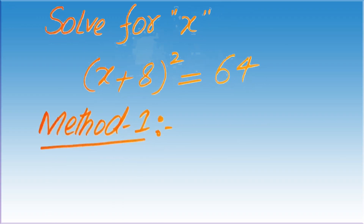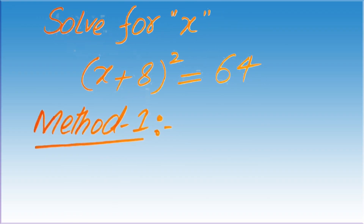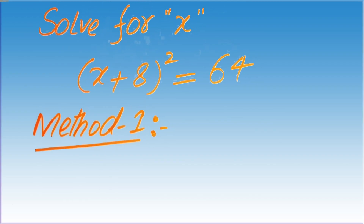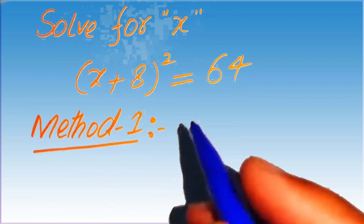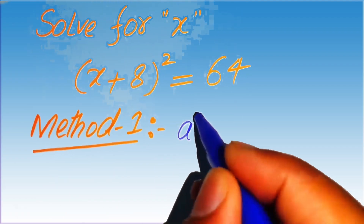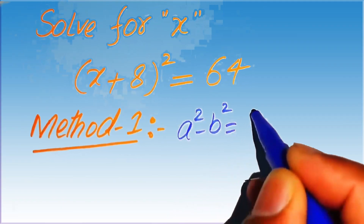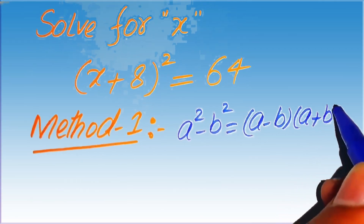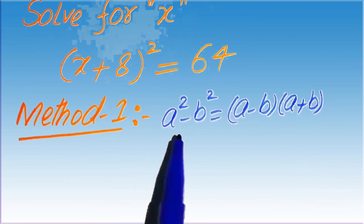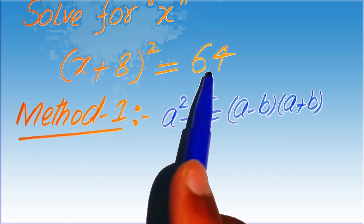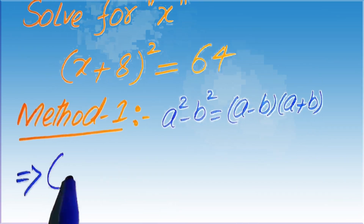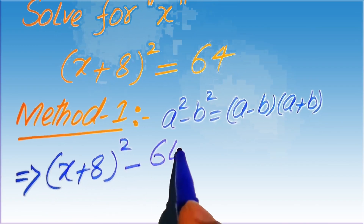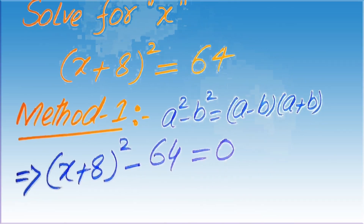We move forward to solve this problem using method number one. In the first method, we apply the algebraic formula: a squared minus b squared equals a minus b times a plus b. To apply this formula, we move the 64 to the left-hand side, giving us x plus 8 squared minus 64 equals 0.